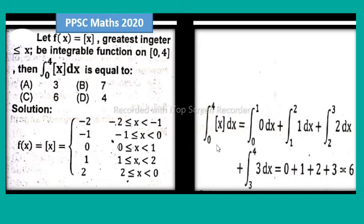So by using integral form, integral from 0 to 4 of [x] dx equals integral from 0 to 1 of 0 dx, plus integral from 1 to 2 of 1 dx, plus integral from 2 to 3 of 2 dx, plus integral from 3 to 4 of 3 dx.